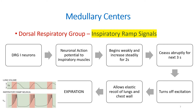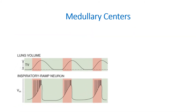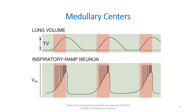This diagram shows the inspiratory ramp signals. The graph shows lung volume alongside the inspiratory ramp signals. Initially, the inspiratory neurons fire for about 2 seconds, during which lung volume increases. Then firing suddenly ceases, and lung volume decreases. This active phase corresponds to the inspiratory neurons firing, and the decrease occurs due to passive recoil of the lungs. These are called the ramp signals.